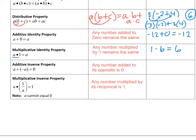The additive inverse property states that any number added to its opposite is zero. So if we have 14 and we add the opposite of 14, which is negative 14, that results in zero.